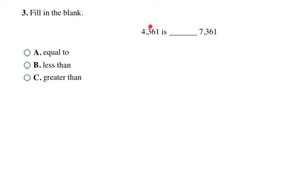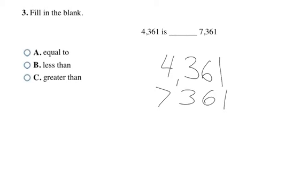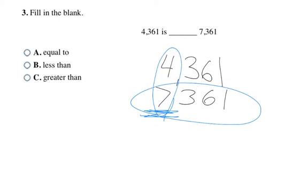Now comparing 4361 to 7361. I write 4361 and underneath, lining up the place value columns, I write 7361. Comparing place value to place value starting on the left, right away I find a difference — the 4 and the 7. Seven is the bigger number, so 7361 is the bigger number. Drawing my symbol eating the bigger number, I get a less than symbol — remember, the L and less than look alike — so 4361 is less than 7361. My final answer is B.